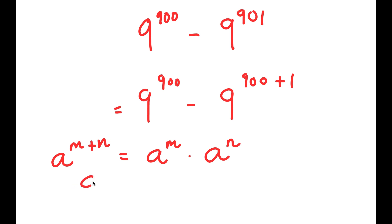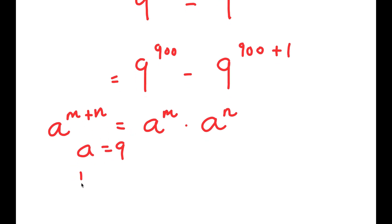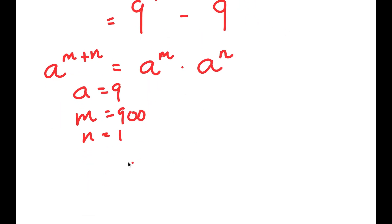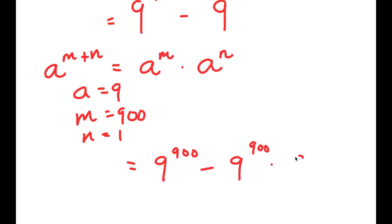In this case, a is obviously 9, m is 900, and n is 1. So we can rewrite 9 to the power of 900 plus 1 as 9 to the power of 900 times 9 to the power of 1.